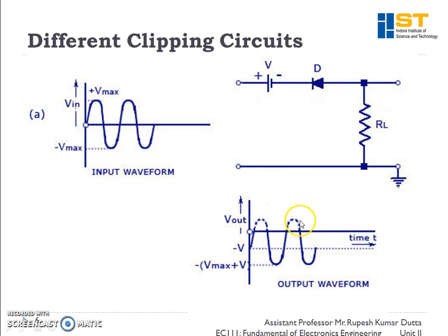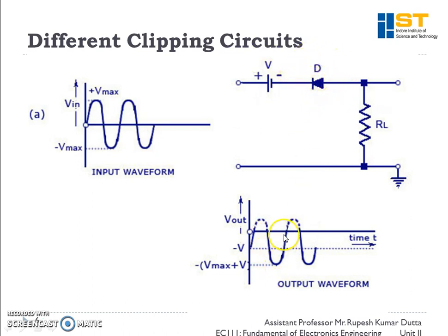As the input voltage decreases and goes negative, the resultant polarity is negative and the diode returns to forward bias. We get output voltage following the input signal, and the peak value is Vmax + V — the sum of the maximum input voltage and the biasing voltage.